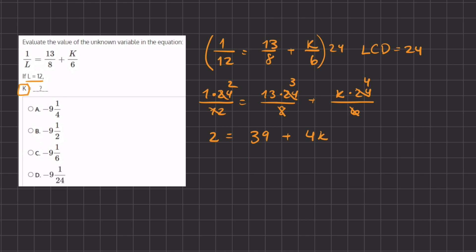Now we are going to simplify this expression by isolating the k. So we're going to subtract 39 on both sides. And we have 2 minus 39, which gives us negative 37 equals 4k.